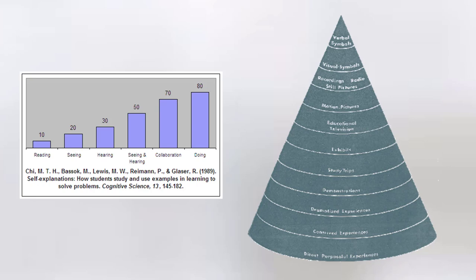The cone of learning on the right comes from a 1969 publication and has been floated around the literature as well. However, that publication wasn't primary research. Whether it was responsible for the graph on the left I don't know, but both have been circulating without primary research supporting that learning styles are actually effective.